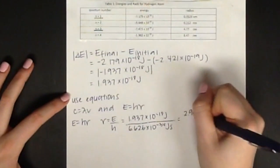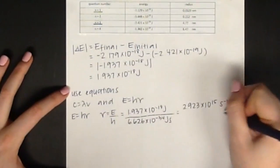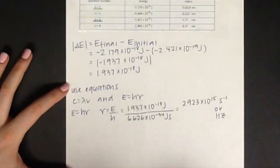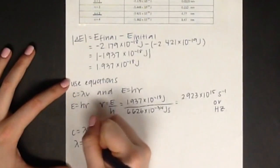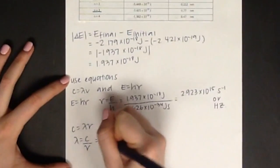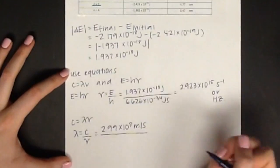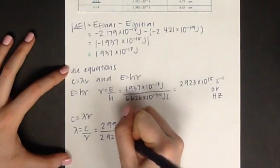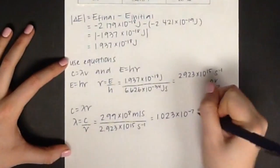We can now use the equation c equals lambda times frequency and rearrange to solve for lambda. This leaves us with lambda equals c over frequency. c equals the speed of light, which is a constant, and frequency is the value we got above. For lambda, we get the value of 1.023 times 10 to the negative 7 meters. We can now convert the meters into nanometers.